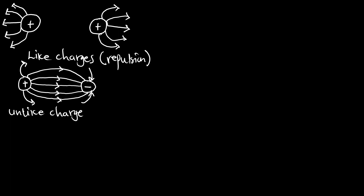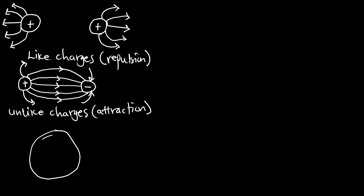Now let's look at a concentric scenario where we have a positive charge placed at the middle, surrounded by negative charges on all sides. What we will experience is the lines of force being attracted from the positive center outward to the surrounding negative charges, because the charges are opposite charges.